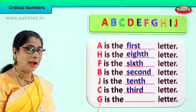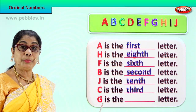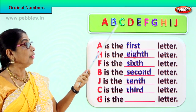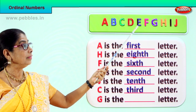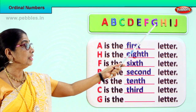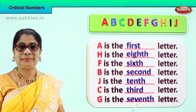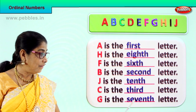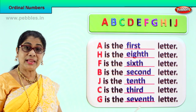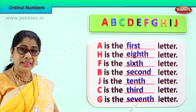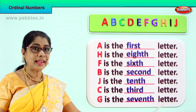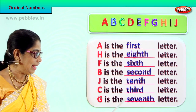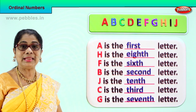Now let's look at one more letter — G. Where is G in ordinal position? A is first, second, third, fourth, fifth, sixth — seventh. Letter G is the seventh letter. Spell seven and add TH: S, E, V, E, N, T, H — seventh. G is the seventh letter.